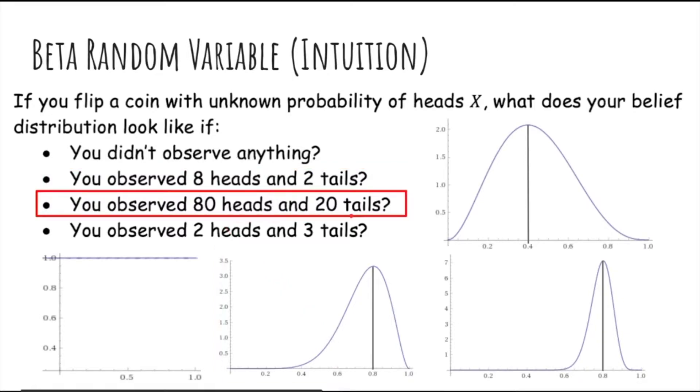What about 80 heads and 20 tails? Again, you'd expect it to be around 80%, but now since you have more flips, you can be a little bit more certain that the probability is probably much closer to 80%.